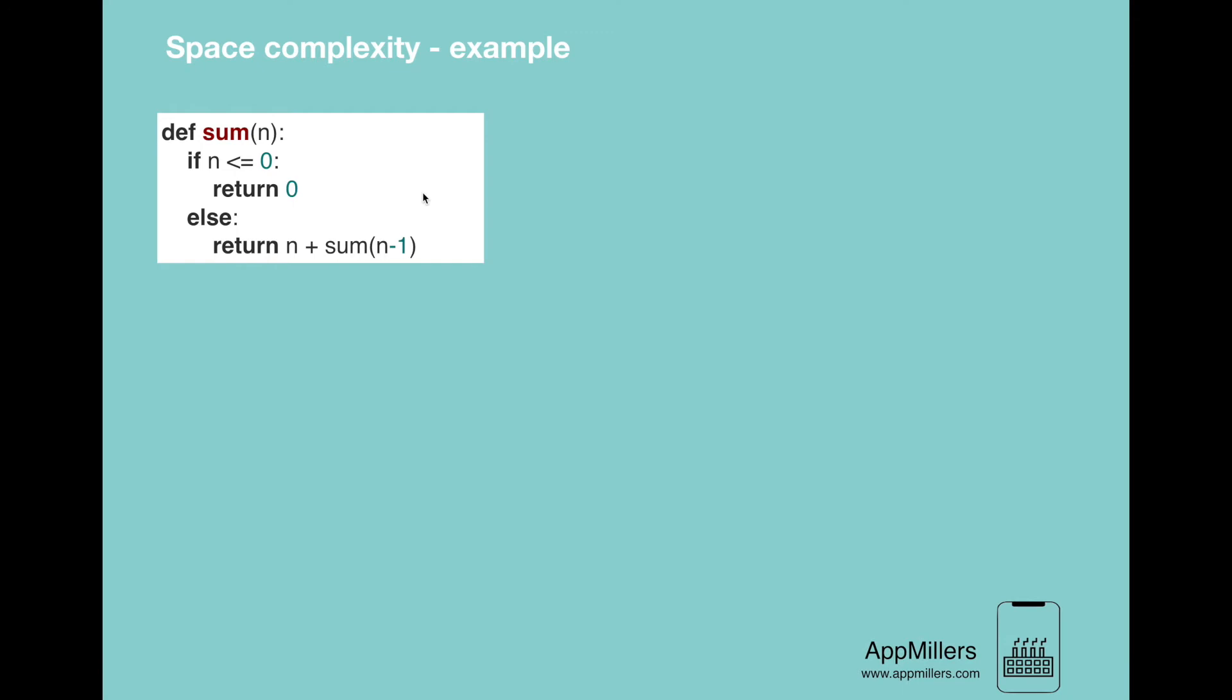If each call adds a level to the stack and takes actual memory, this means that we need O(n) memory space for this block of code.